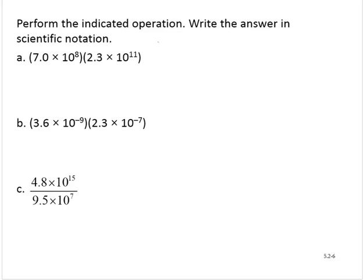In exercise A, we have 7.0 times 10 to the 8th by 2.3 times 10 to the 11th. So I can rearrange and regroup. And so I'd have 7 times 2.3, and then I'd have times 10 to the 8th times 10 to the 11th.